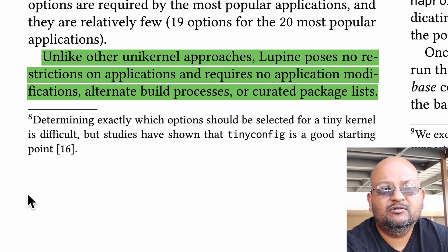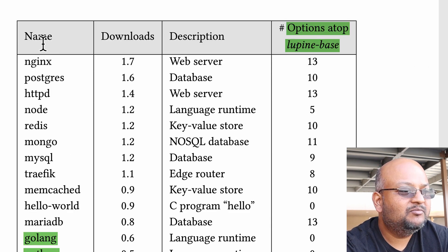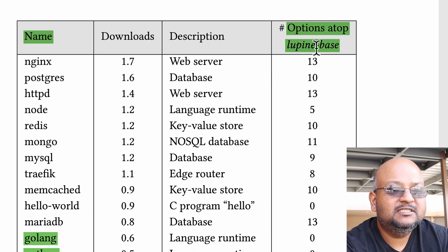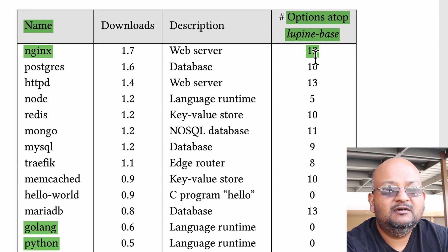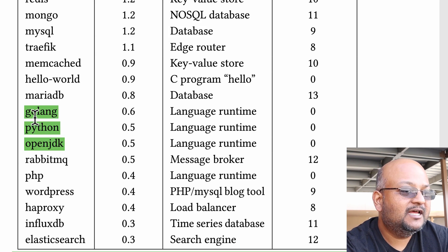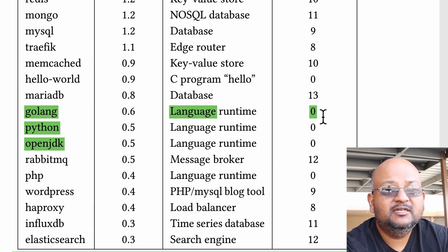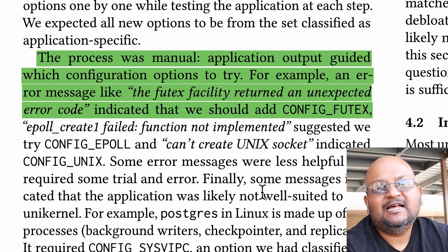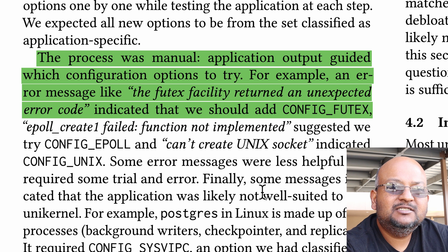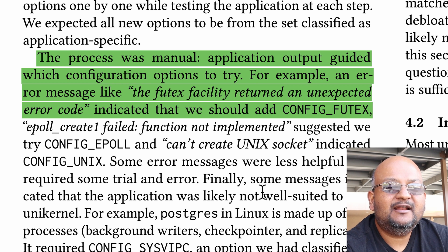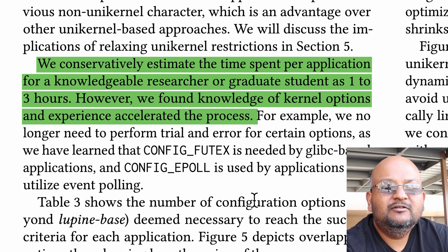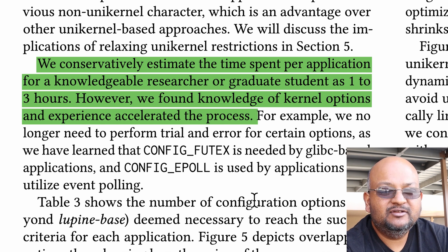You don't need to even change the source code of your application. Here's a look at some popular applications and how many kernel options they required on top of the base kernel options. For example, Nginx required only 13. More importantly, popular language runtimes like Go, Python, or the Java runtime required no additional options on top of the base configuration. This was more of a manual process — they ran the application on top of the base config, saw what broke, and then added configuration options to fix that. If you know what you're doing, this should be a fairly quick process, and it certainly beats specializing your application to build a unikernel out of it.